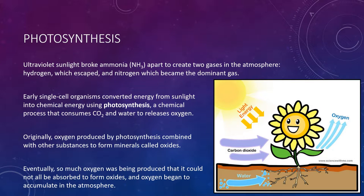The appearance of life on Earth set into motion a radical transformation of the atmosphere. Early single-cell organisms converted energy from sunlight into chemical energy using the process of photosynthesis — a chemical process that consumes carbon dioxide and water and releases oxygen. Oxygen molecules are very reactive, so originally most of the oxygen produced by photosynthesis combined with other substances to form minerals called oxides. Eventually, so much oxygen was being produced that it could not all be absorbed to form oxides, and O2 began to accumulate in the atmosphere.